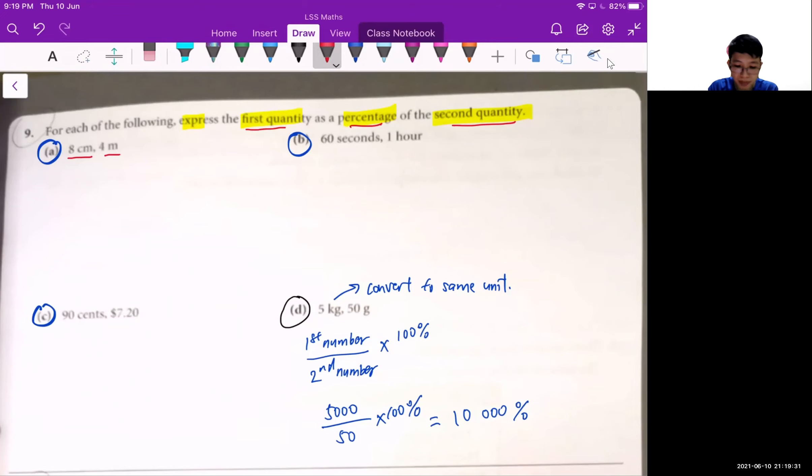So for meter, to convert it to cm, centimeter, I need to times 100. So it is 400 cm. So I want to express the first quantity, which is 8 cm, as a percentage of the second quantity, which is 400. And I want to express it as a percentage. So I express them as a fraction first, then I find out what is the percentage. So in this case, it'll be 8 over 400.